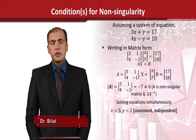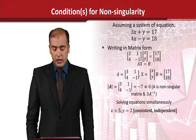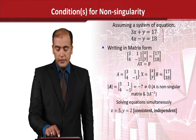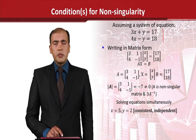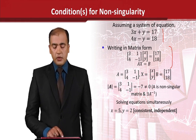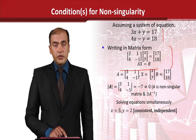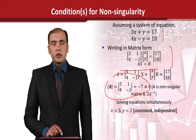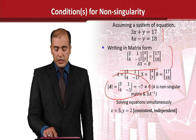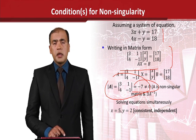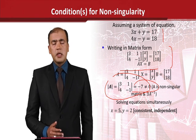As you can see, we have started with a system of equations. There are two equations in terms of x and y. When we write them in matrix form — we already know how to do that — we get three matrices, and then we find the determinant of the coefficient matrix. It appears to be minus 7, which is not equal to 0, and our existing knowledge tells us that this is a non-singular matrix.